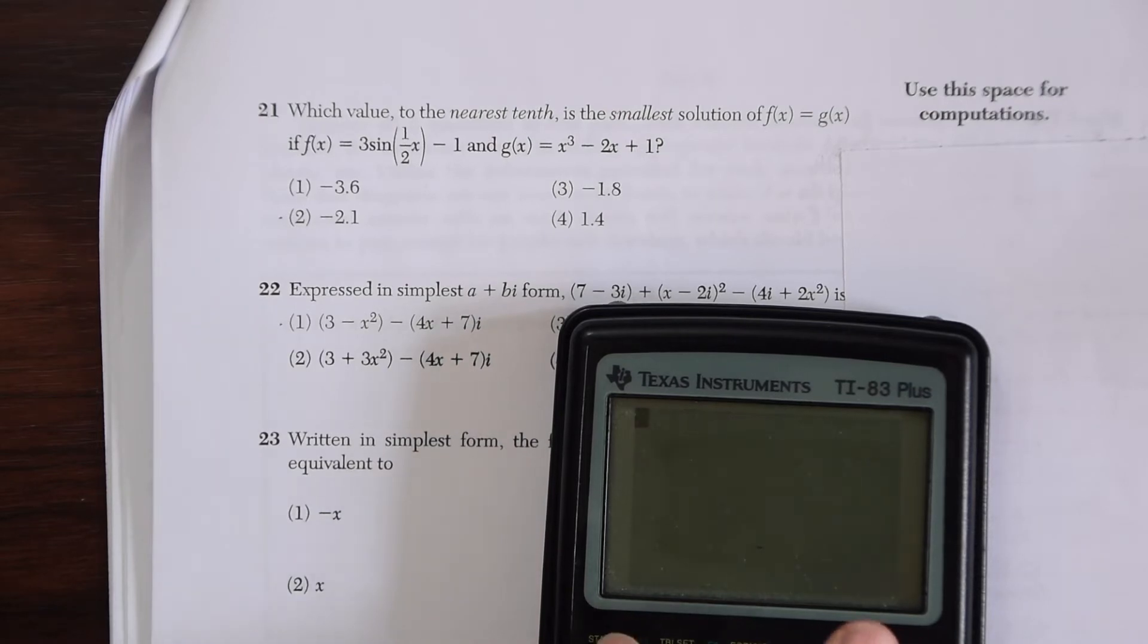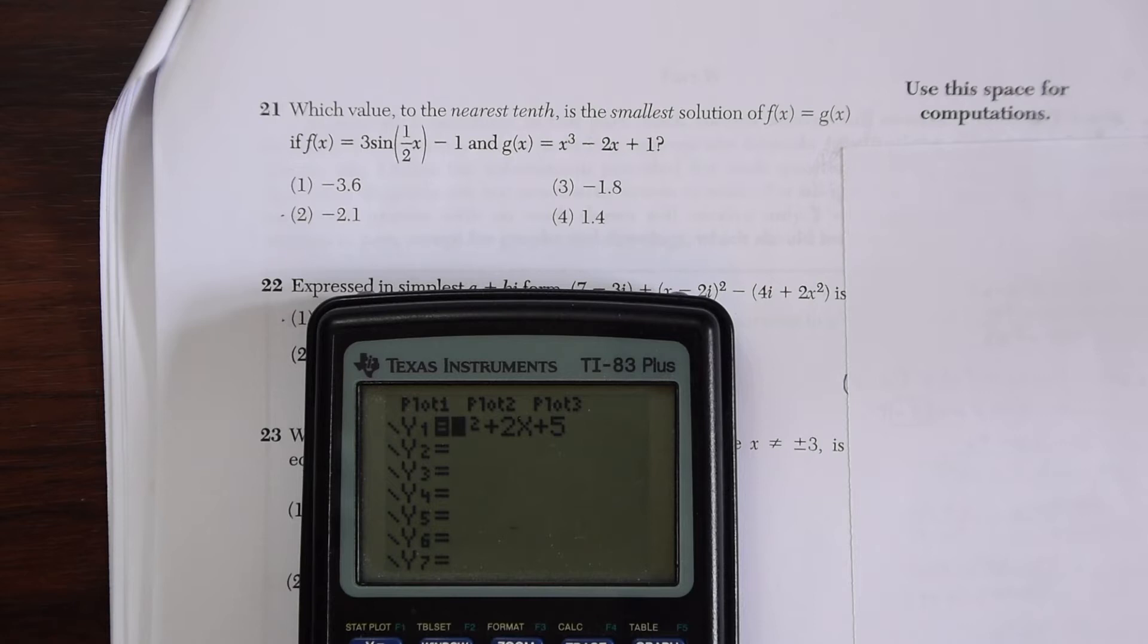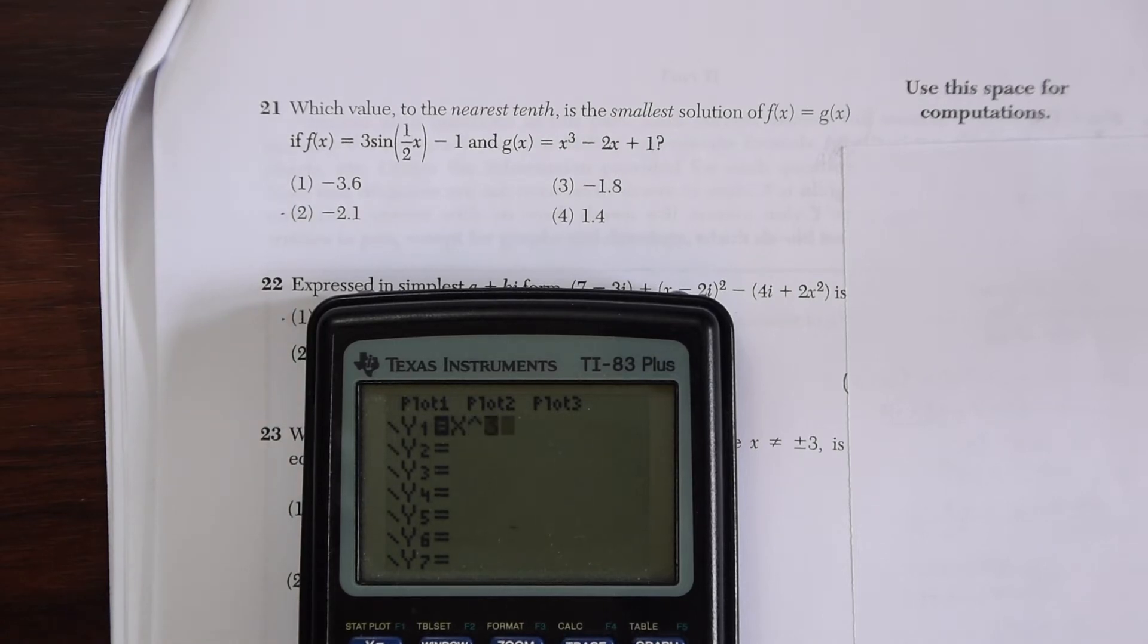Let's go ahead and do that. I'm going to plug in g(x) first into the y equals section, the graphing section. So go y equals x to the third power minus 2x plus 1 and graph it. Let's see what we get. We get something that looks like that.